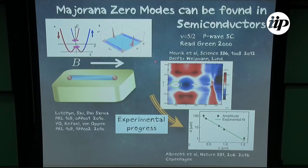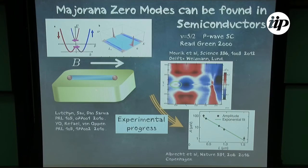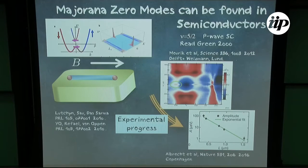Experimentally, there were two waves of experiments. The first was in 2012 — experiments in Delft and Lund where a zero-bias peak was measured in this kind of sample. Recently there is a new wave of experiments from Copenhagen and Delft. One of the main obstacles in this problem is tuning the chemical potential to be at the right place.